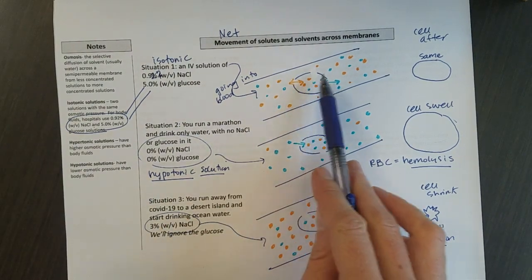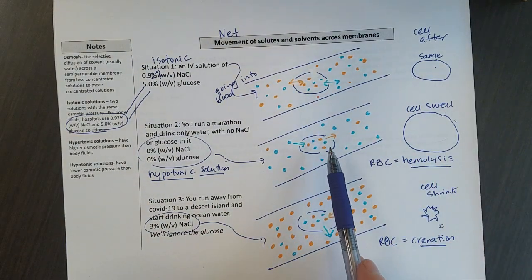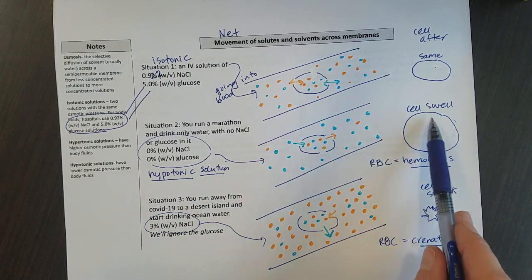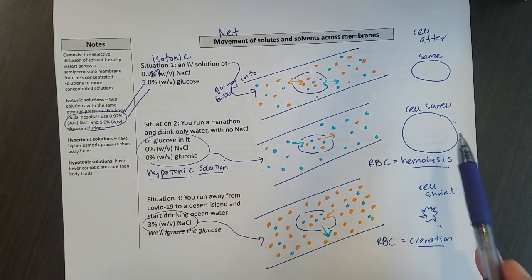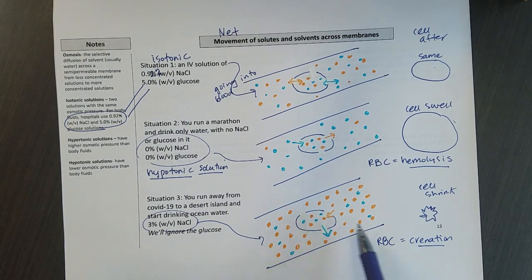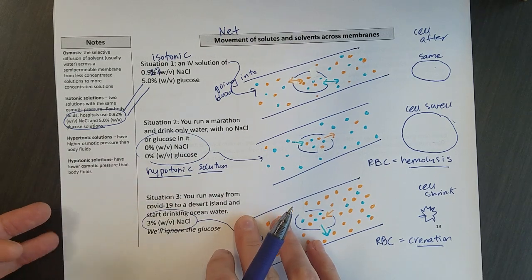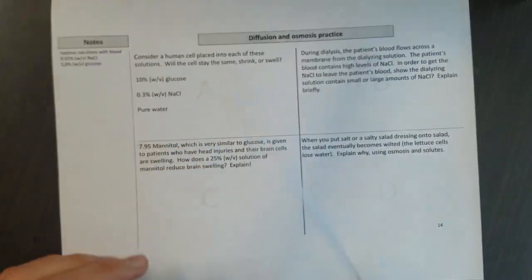So those are a couple of vocab words you might see. Isotonic solution, my cell stays the same. Hypotonic solutions, my cells swell. I've heard people say that this is like a hypo-hippo. And then crenation happens or shrinking happens when I put my cell into a very salty solution. So you don't want to drink ocean water or run away to a desert island. So let's take a look at a couple quick applications of this, and then we'll be done here.